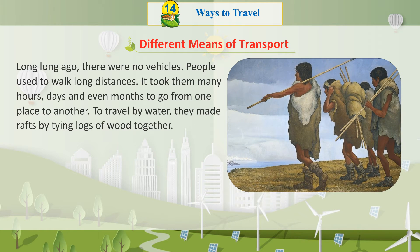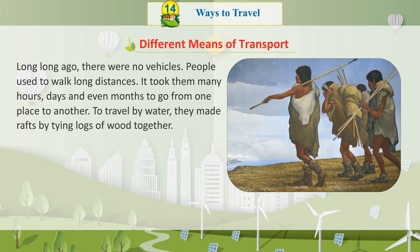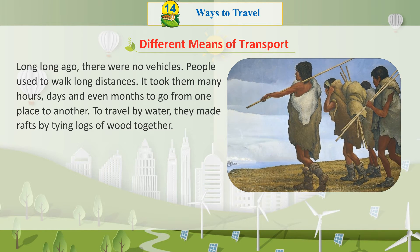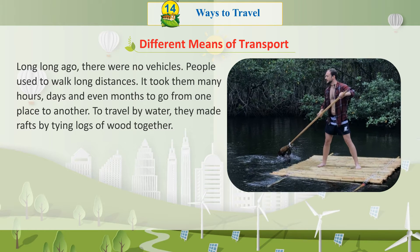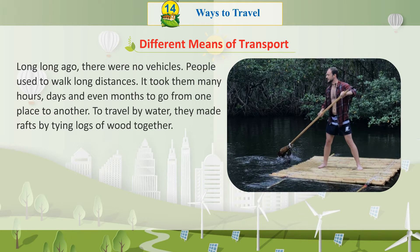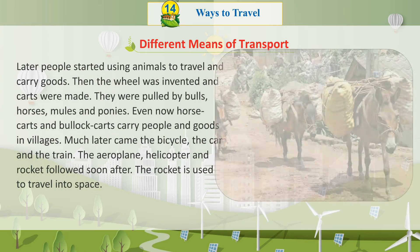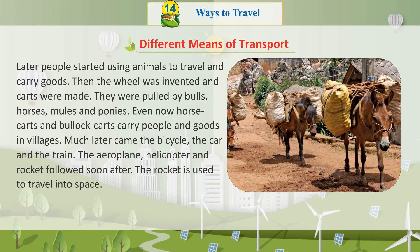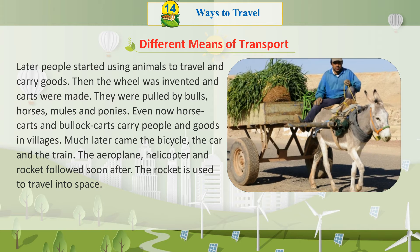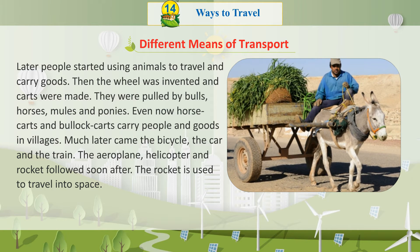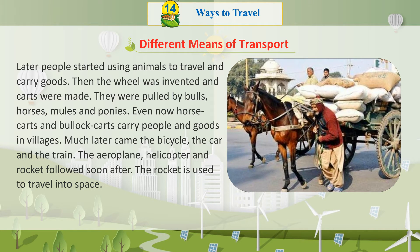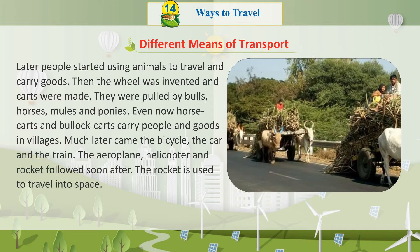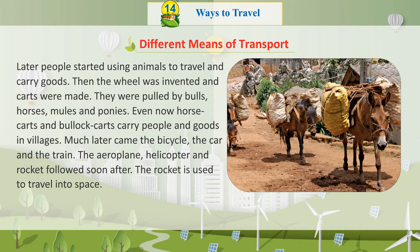Long, long ago, there were no vehicles. People used to walk long distances. It took them many hours, days, and even months to go from one place to another. To travel by water, they made rafts by tying logs of wood together. Later, people started using animals to travel and carry goods. Then the wheel was invented and carts were made. They were pulled by bulls, horses, mules, and ponies. Even now, horse carts and bullock carts carry people and goods in villages.